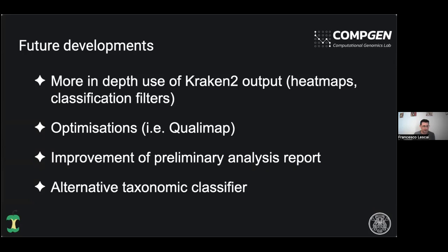For future work, Kraken's output allows us to appreciate taxonomic assignments by a sliding window of k-mers, which will allow us to draw more information in terms of classification filters or heat maps for investigating the biology. We will dedicate work to optimizing the computing part of the pipeline, addressing Qualimap issues, improving the preliminary analysis report which currently runs only on humans, and considering the introduction of alternative taxonomic classifiers as seen in other NFCore pipelines.